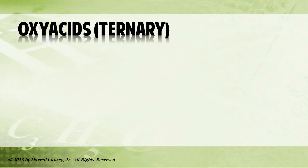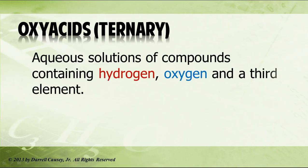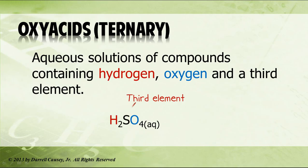Now let's look at oxyacids, or what was known at one time as ternary acids. These are aqueous solutions of compounds that contain hydrogen, oxygen, and a third element. Here's an example: H2SO4, and the third element is sulfur.